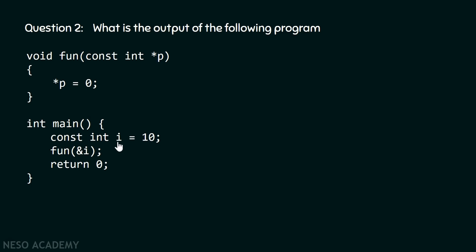In the first statement, we have the declaration of a variable i — it is an integer variable containing value 10. But this is not a normal variable; it is a constant variable. If we put the `const` keyword in front of this variable, it means we cannot change the content of this variable throughout the program. After this, we are calling function1 and passing the address of variable i to it.